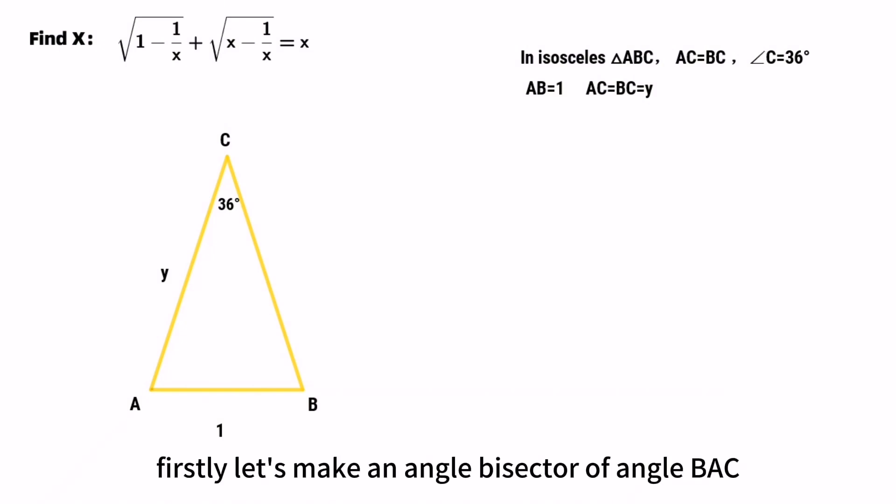Firstly, let's make an angle bisector over angle BAC. We can get two angles of 36 degrees. We can calculate angle ABD equals angle BDA of 72 degrees.